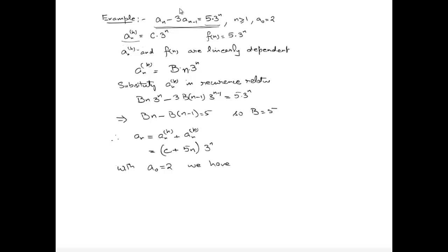Applying the initial condition a₀ = 2 gives 2 = c. Therefore the final solution is aₙ = (2 + 5n)·3ⁿ.